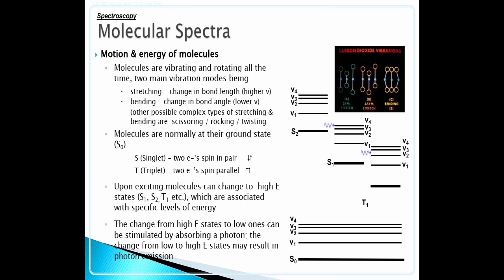As singlet, two electrons spin in pair. In triplet, two electrons spin parallel. Upon exciting, a molecule can change to high energy states S1, S2, T1.